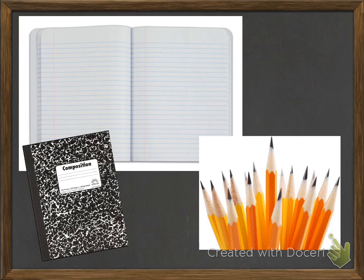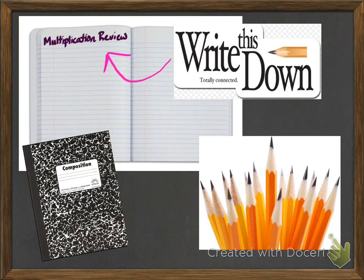What you're going to need is your composition notebook and a sharpened pencil. When you open up your composition notebook, open it to the next available two pages like you see here, and we're going to start by writing on the left-hand side multiplication review. Go ahead and write that down.